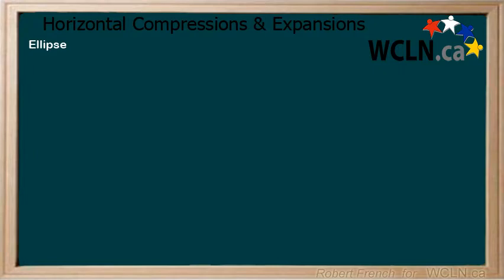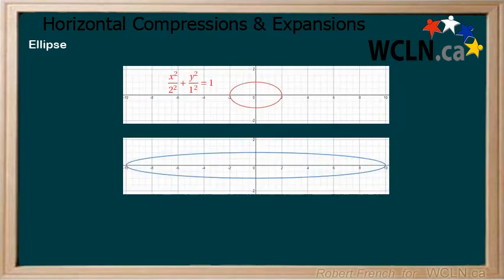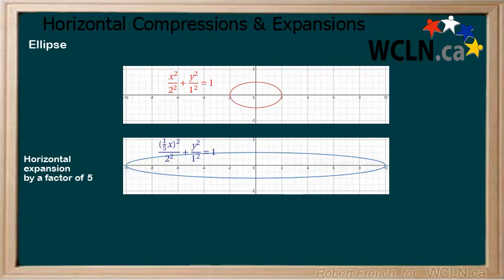Next, we will look at an ellipse. Here is both the equation and graph of an ellipse. Now apply a horizontal expansion by a factor of 5. To do this, we multiply x by 1 over 5. We can see how the graph of the ellipse changes as well.